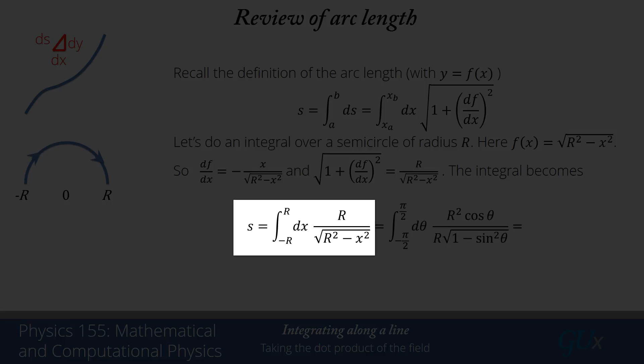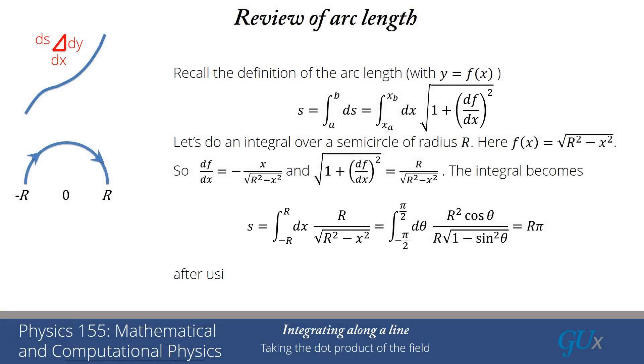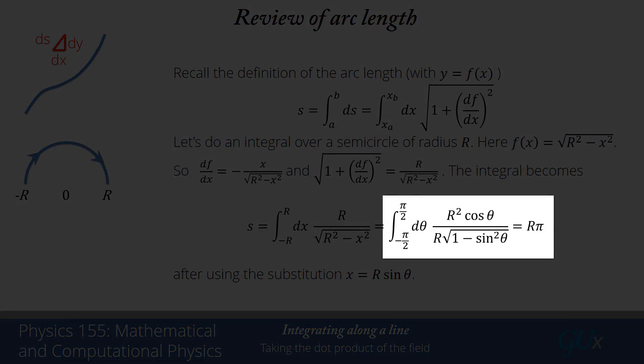We handle this with a trig substitution: x equals r sine theta. The integral goes from minus pi over 2 to pi over 2, dx becomes r cos theta d theta, and the square root of r² minus x² becomes r times the square root of 1 minus sine squared, which is cosine theta. The cosine thetas cancel in the numerator and denominator, and I'm left with an integral of r d theta. That gives r times pi.